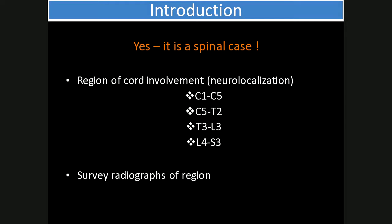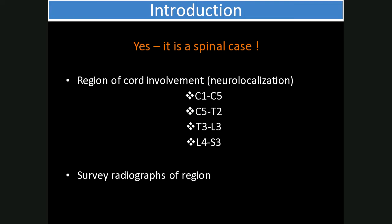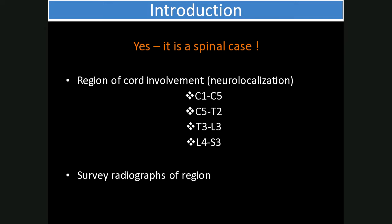Once we've determined that yes, it is a spinal case, we need to do a clinical exam to localize the lesion — called neurolocalization. This is generally split into lesions from C1 to C5, C5 to T2, T3 to L3, or L4 to S3. It's important to take survey radiographs of the region before jumping to more advanced imaging such as CT or MRI, because radiographs can already detect important pathology such as discospondylitis, fractures, luxations, degenerative changes, as well as changes in bone opacity and alignment.